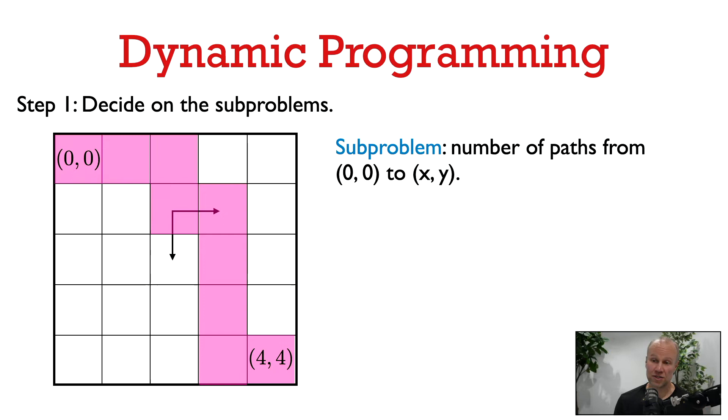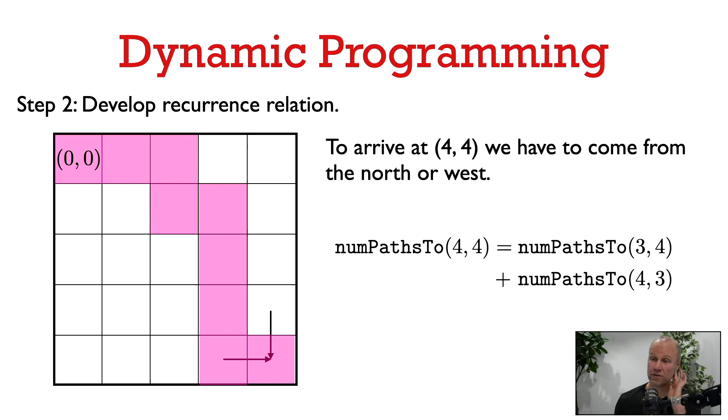In general, we're going to talk about the number of paths from 0,0 to some other cell x,y in this grid. The second general step of dynamic programming is to develop a recurrence relation using your choice of subproblem.